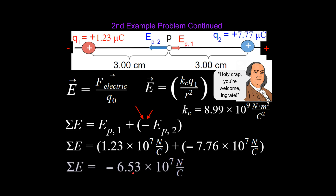We plug in our numbers and end up with not the sum of the magnitudes but the difference, with the sign of the greater vector. The result is negative 6.53 times 10 to the seventh newtons per coulomb — meaning it points to the left. That's how you do linear electric field problems. I'll likely do more screencasts in this series covering more complex problems, such as two-dimensional cases where charges aren't in a line but form a triangle. The principles are the same — it's just working with vectors in two dimensions. Thank you for listening, have a great day!